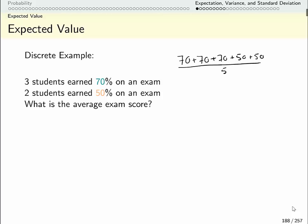So we could call this 70 plus 70 plus 70 plus 50 plus 50 and there were five students. So that's one way of making the average. A somewhat more efficient way is to say this is 3 times 70 plus 2 times 50 divided by 5.